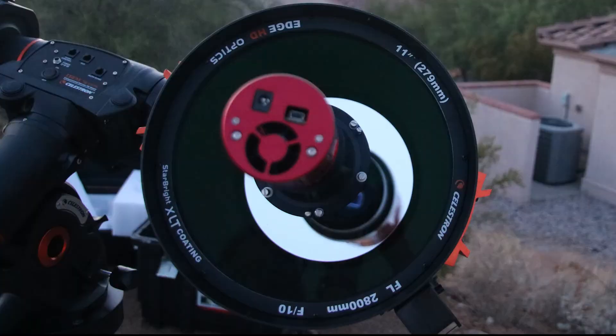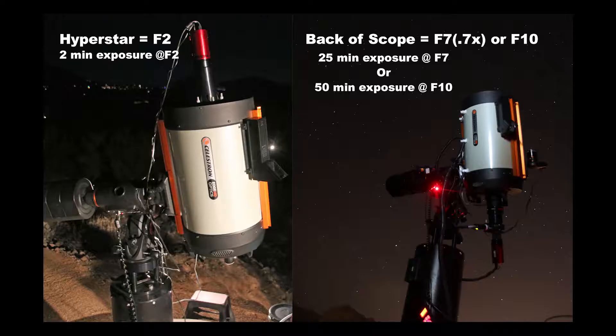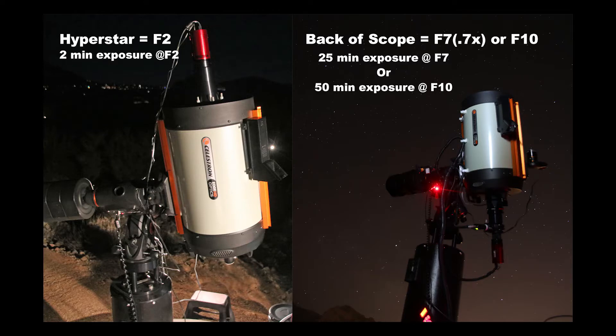This results in greatly increasing the telescope's aperture to f2 and reduces the exposure duration by 25 times compared to the back of the scope at f10.